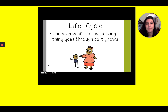Now, every living thing goes through something called a life cycle. A life cycle is the different stages of life that a living thing goes through as it grows. For example, there's a little boy with his mommy. That little boy is not going to stay a little boy forever. You're going to start out as babies, then grow into toddlers and kids, eventually become a teenager, and then one day you're going to be an adult. So you're going to go through a life cycle — you start as something, but as you grow, you change quite a bit.